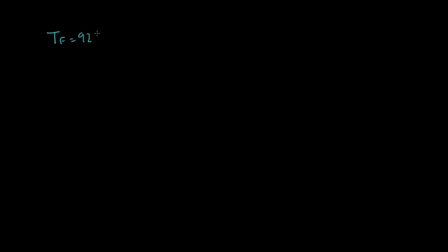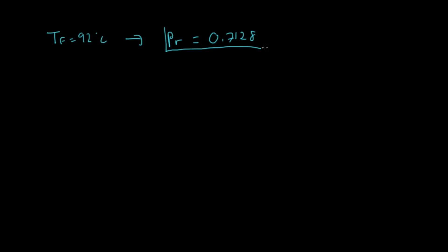We need a Prandtl number, and for that we're going to look it up in the tables as well. Using our film temperature of 92 degrees, this gives a Prandtl number of 0.7128. Note that I used the same film temperature in the same air property table, so this is also an interpolated value.